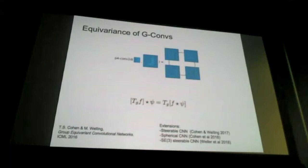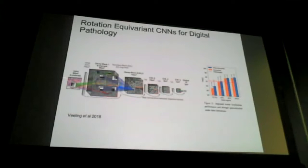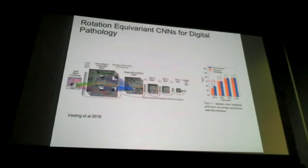We applied this idea to digital pathology using a dense network with pathology input images and four rotations, giving four equivariant filter maps. You simply replace a normal convolution with this rotation-equivariant convolution. The results really improve: human performance is the baseline, the normal CNN/DenseNet is lower, and the rotation-equivariant version improves especially when you have fewer data points.